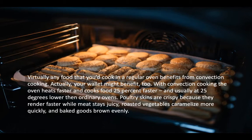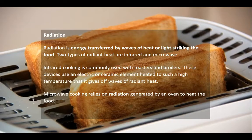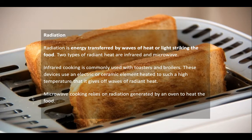With radiation, heat energy is transferred by waves of heat or light striking the food — like a microwave. The two types of radiant heat are infrared and microwave. Infrared cooking is commonly used in toasters and broilers, which use electric or ceramic elements heated to such a high degree that they give off waves of radiant heat. Microwave cooking relies on radiation generated by an oven to heat the food.